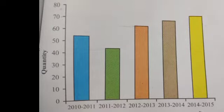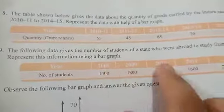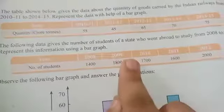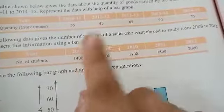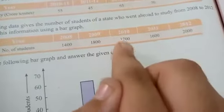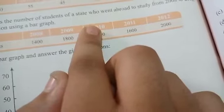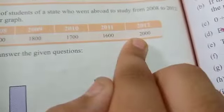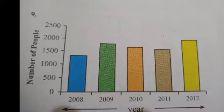Now this is our ninth question. This is data from 2008 to 2012 showing how many students from a state went abroad each year. We have made a bar graph for this data, including the value for 2010.